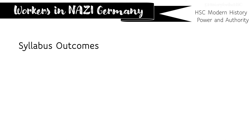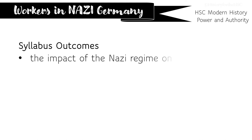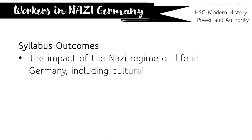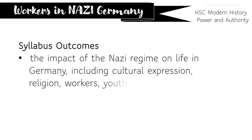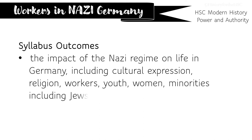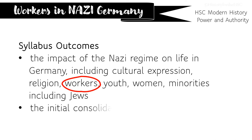In today's video, we're going to continue studying the same syllabus dot point that we've been looking at for a little while now. It tells us we look at the impact of the Nazi regime on life in Germany, including cultural expression, which we've done already, religion, workers, youth, women and minorities, including Jews. We've already posted videos on the impact of the regime on cultural life and religion, and today, obviously, focusing on workers.